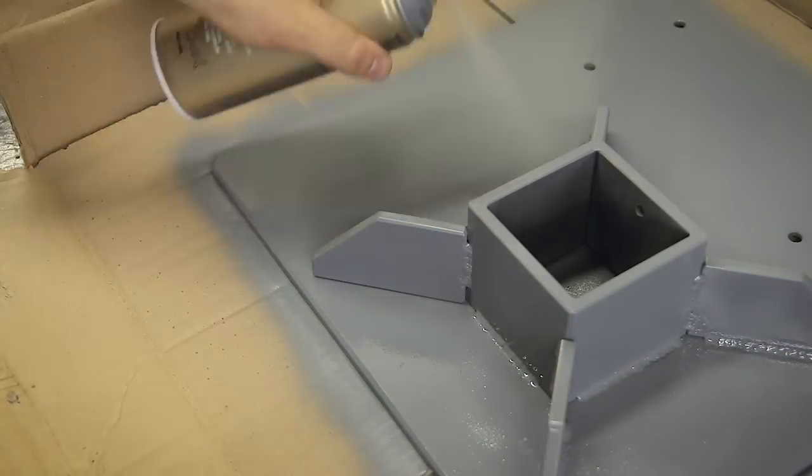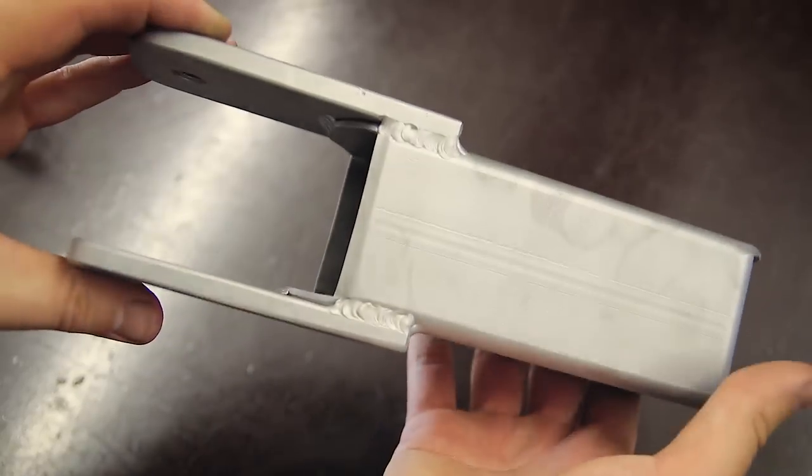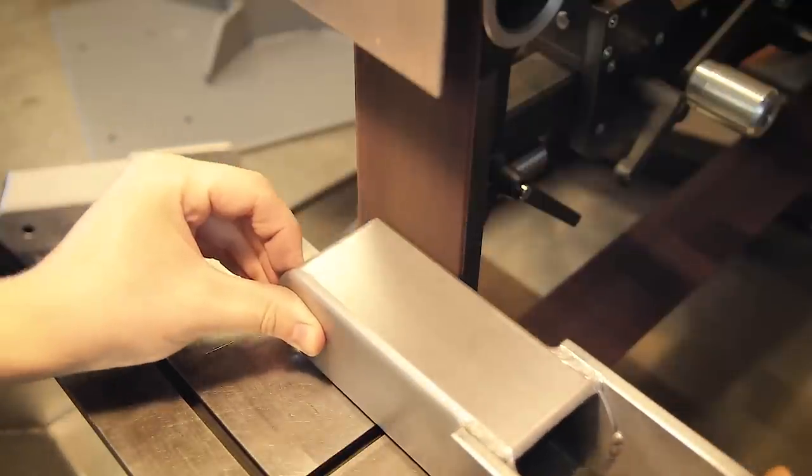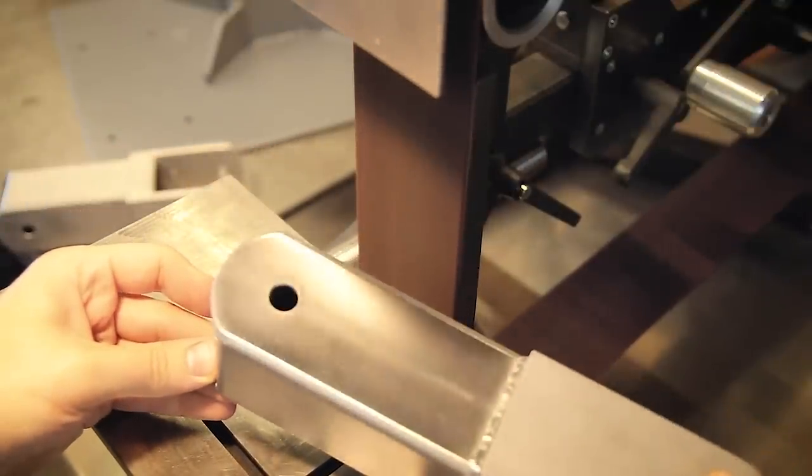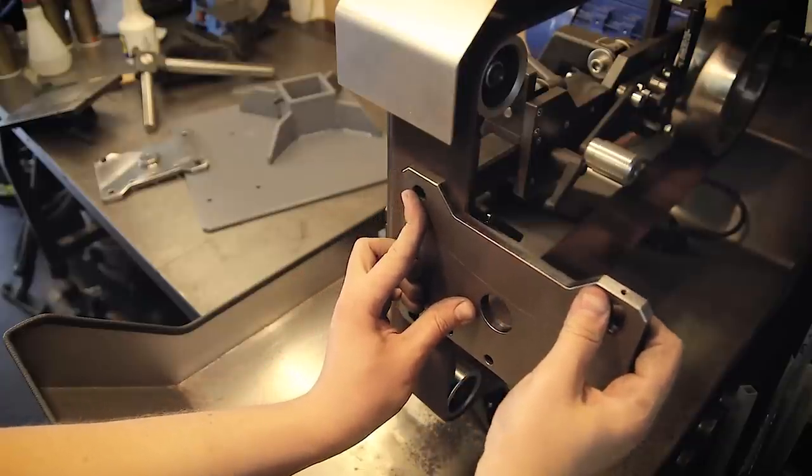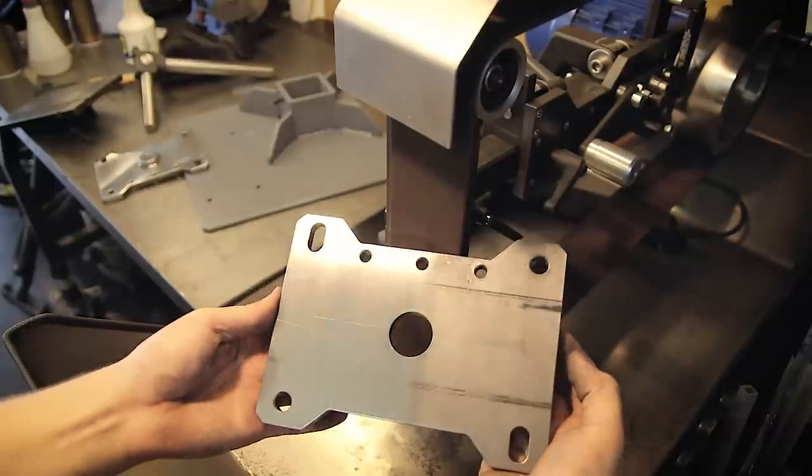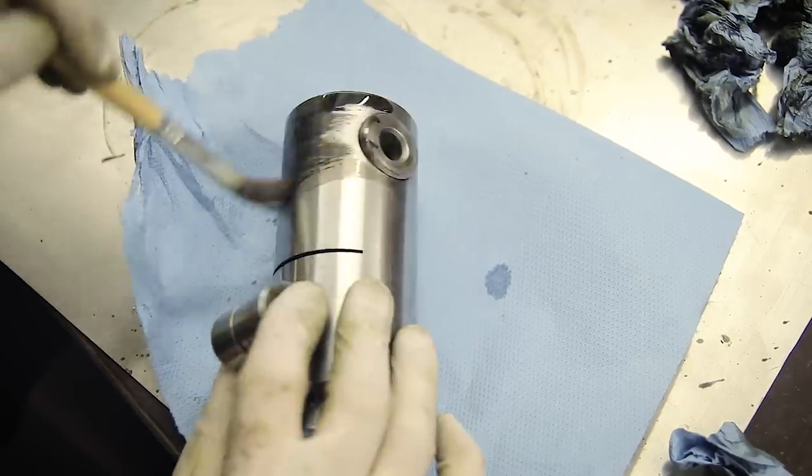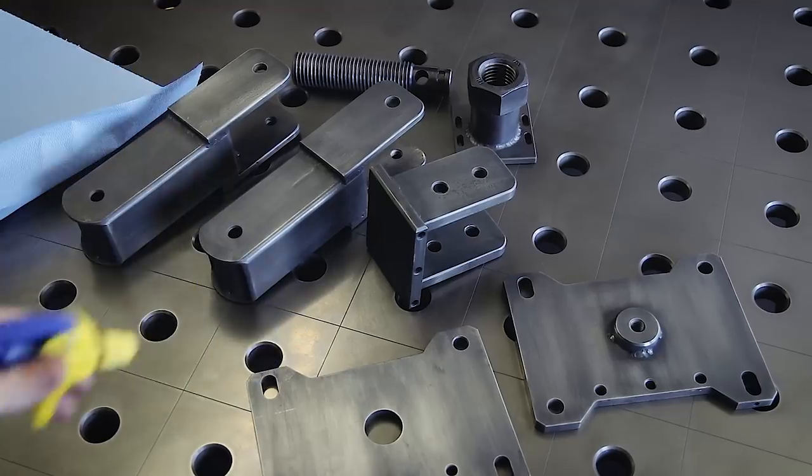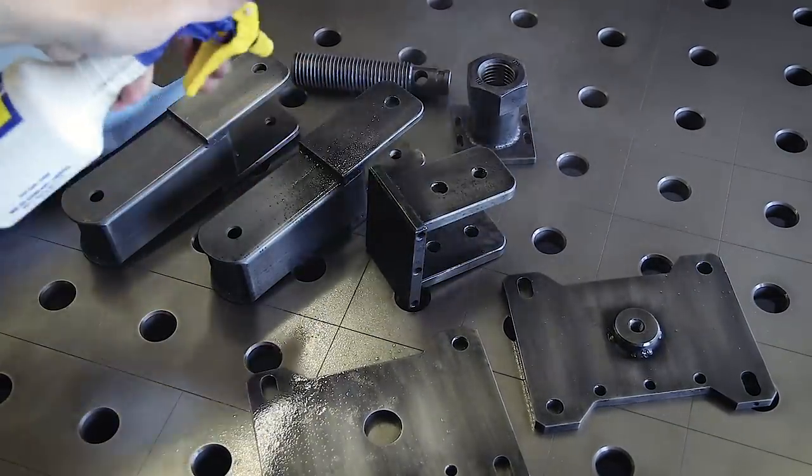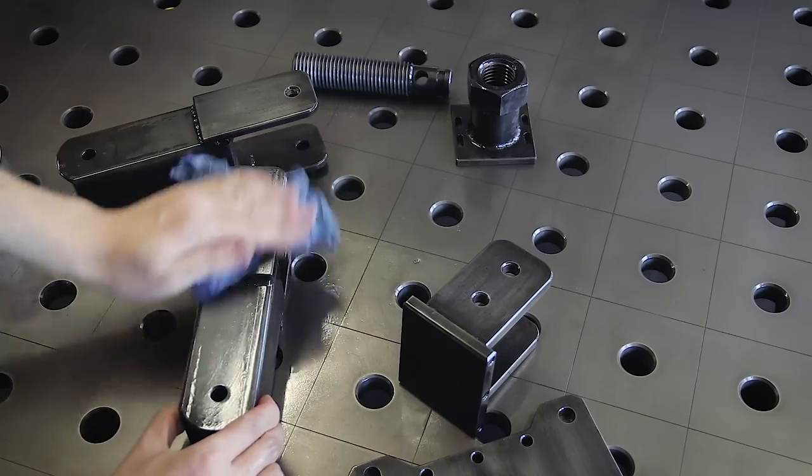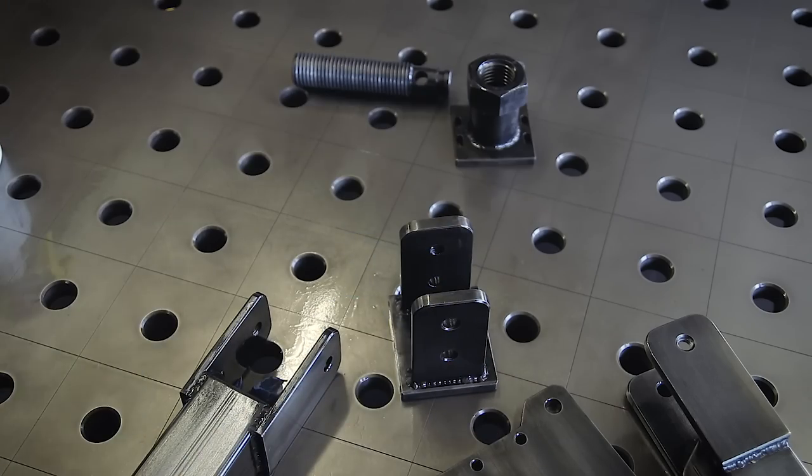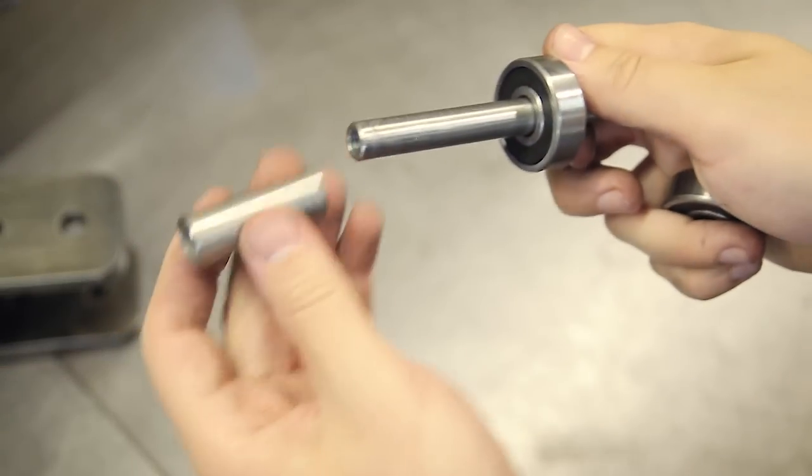But before that I cleaned up some of the remaining mill scale in the blast cabinet and buffed up the clean surfaces. I once again used cold-bluing as a finish for most of the moving parts, followed by a generous coating of WD-40. And with that I can finally put everything together, starting with the carriage.